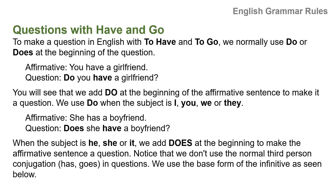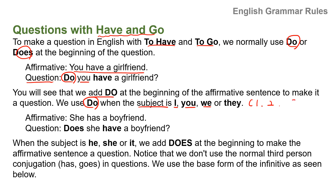Making questions with have and go. To make a question in English with 'to have' and 'to go', we normally use 'do' or 'does'. For example: 'you have a girlfriend' — this is affirmative. The question form is: 'Do you have a girlfriend?' We add 'do' at the beginning of the affirmative sentence to make it a question. We use 'do' when the subject is I, you, we, or they — these are first and second person singular and plural, and third person plural.